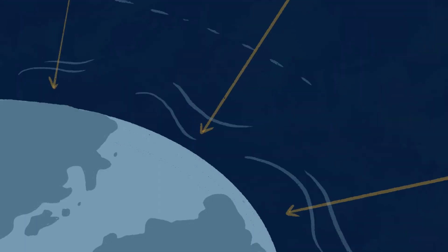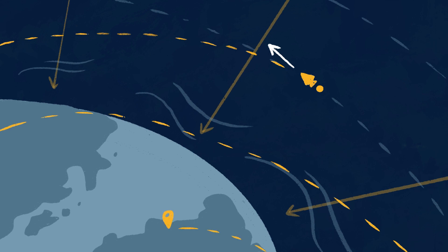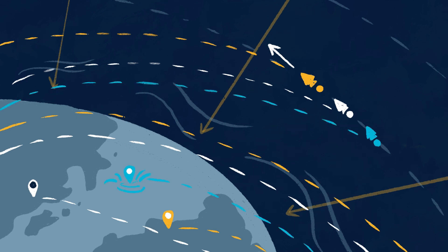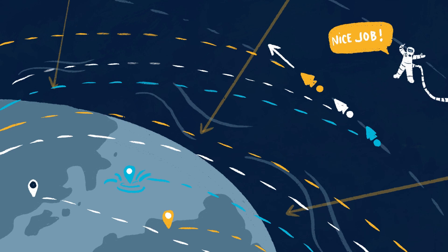If a spaceship breaks off too early or too late, it could miss its landing zone. That could mean crashing into the wrong continent or splashing down in the ocean. But with a little engineering, astronauts can live to space out another day.